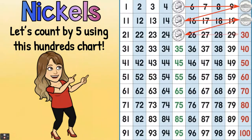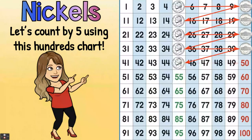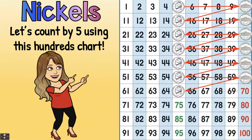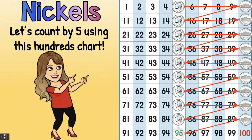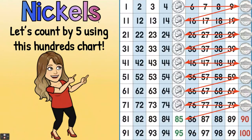Let's count by fives using this hundreds chart: five, ten, fifteen, twenty, twenty-five, thirty, thirty-five, forty, forty-five, fifty, fifty-five, sixty, sixty-five, seventy, seventy-five, eighty, eighty-five, ninety, ninety-five, one hundred. Notice that when we count by fives the numbers have a pattern — they end with a five and then a zero, then a five and then a zero, back and forth.